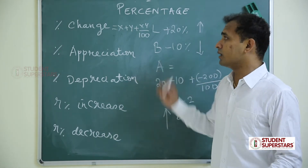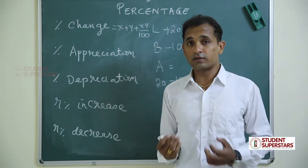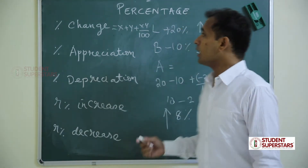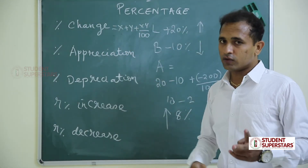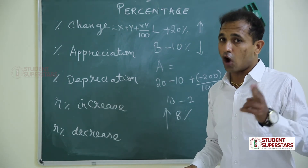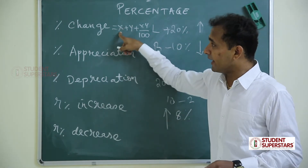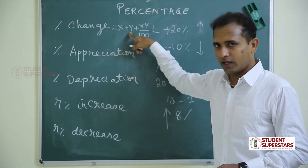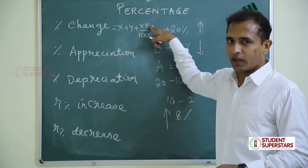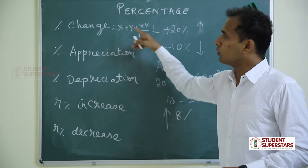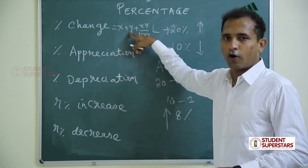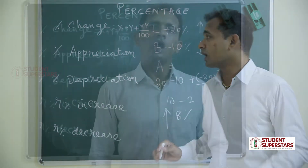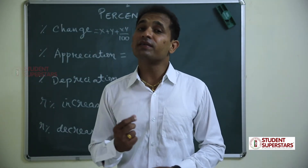Similarly, if the radius of a circle increases by 20 percent, what is the percentage change in the area? Area = π r², so there are two r values: x = 20, y = 20. Applying the formula: 20 + 20 + (20 × 20)/100 = 40 + 4 = 44 percent increase.